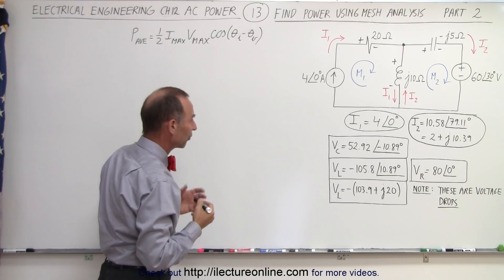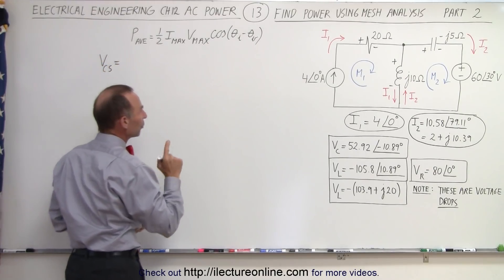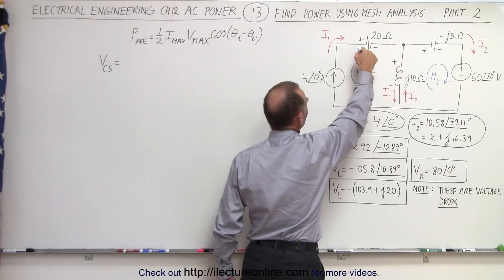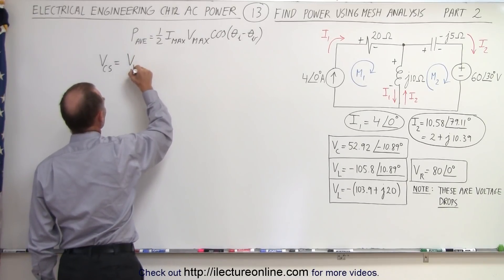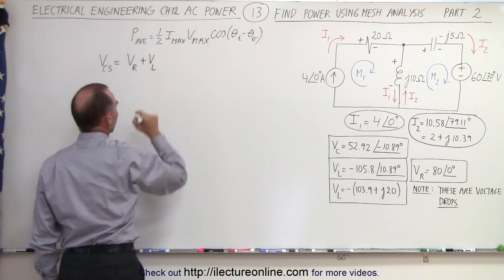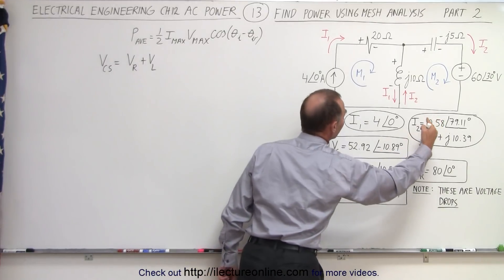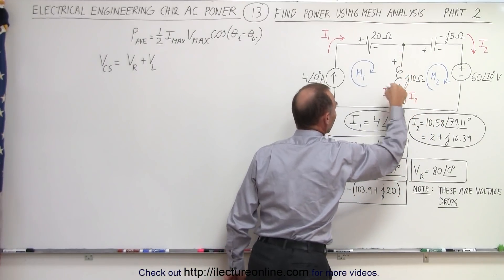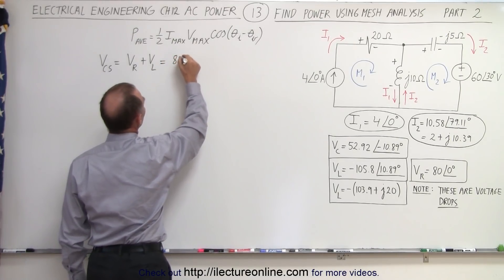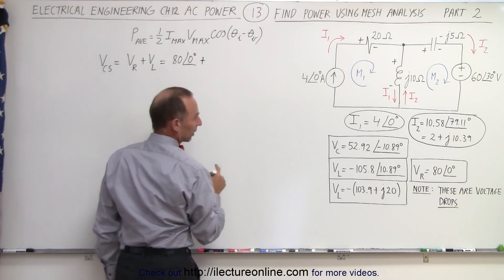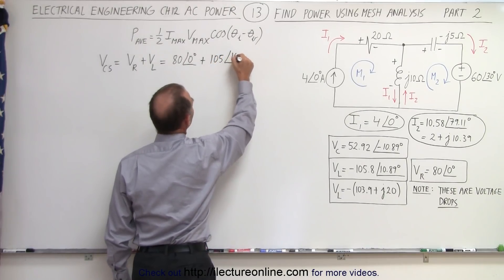That's important to keep in mind when we try to find the voltage across the current source — that's what we're going to do next. The voltage across the current source (CS) is going to be equal to the sum of the two voltage drops — the voltage across the resistor plus the voltage across the inductor. We're talking about the voltage drop across the inductor, which means we need to take away the negative sign because we're going across the inductor in the opposite direction. So this equals 80∠0° plus 105∠10.89°.